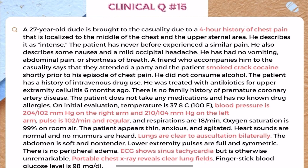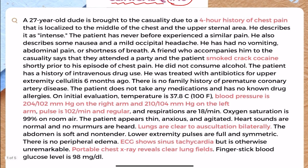Here we have clinical question number 15, posted on our Instagram. A 27-year-old is brought to the casualty due to a four-hour history of chest pain, localized to the middle of the chest and the upper sternal area — more like a cardiac kind of chest pain. He describes it as intense, and the patient has never before experienced a similar episode. He also describes some nausea and mild occipital headache, with no vomiting, abdominal pain, or shortness of breath.